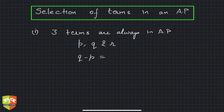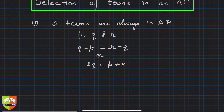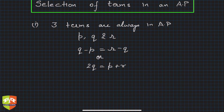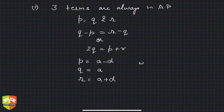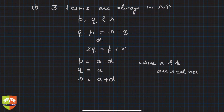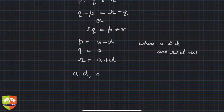Clearly, when q minus p equals r minus q, or equivalently 2q equals p plus r. So what selection of p, q, r ensures they are always in AP? If we select p as a minus d, q as a, and r as a plus d, where a and d are any arbitrary real numbers, then a minus d, a, and a plus d will always be in AP, because their common difference is always d.